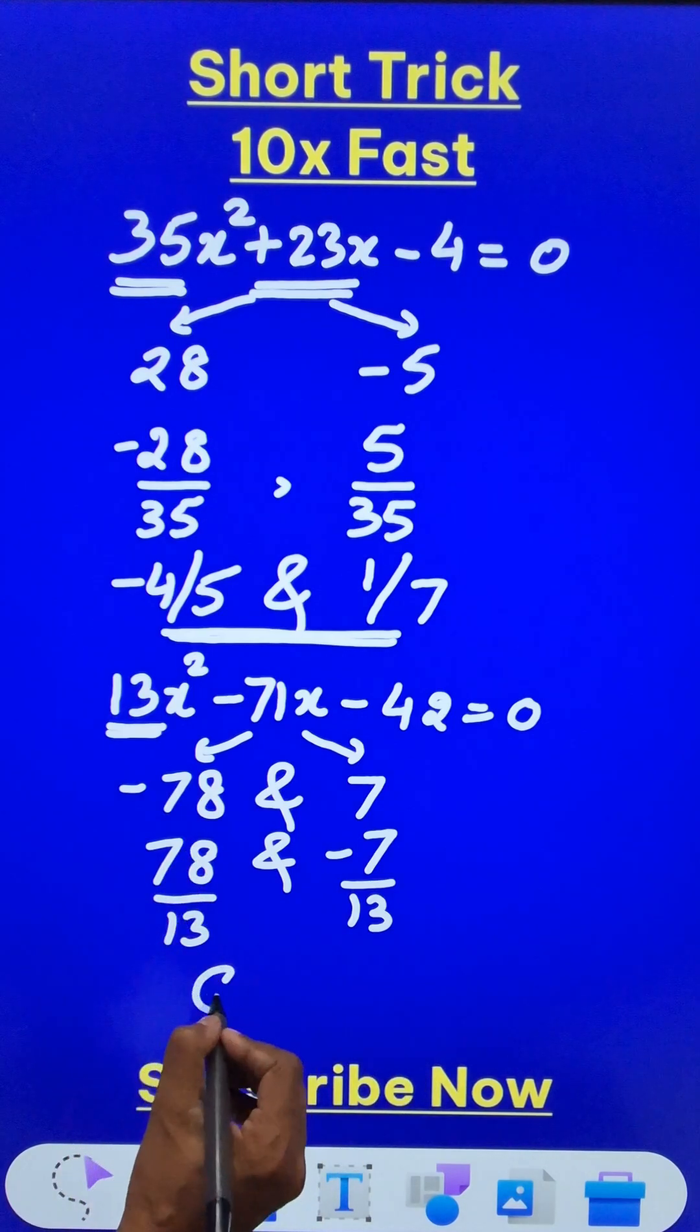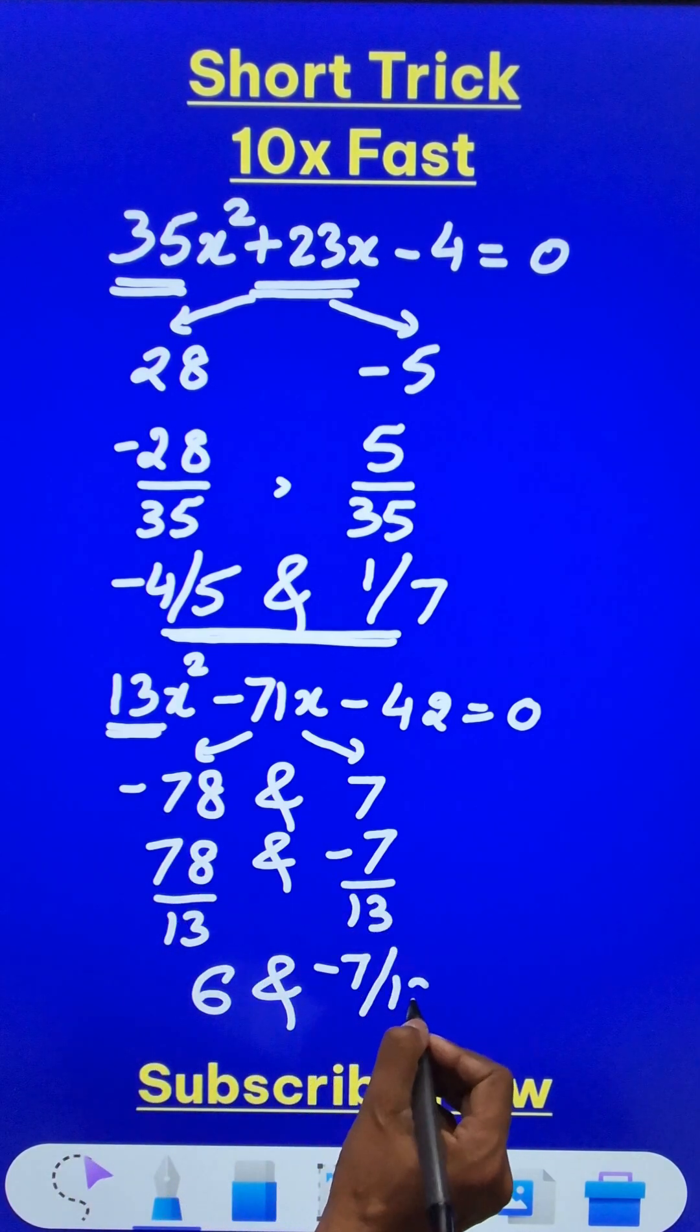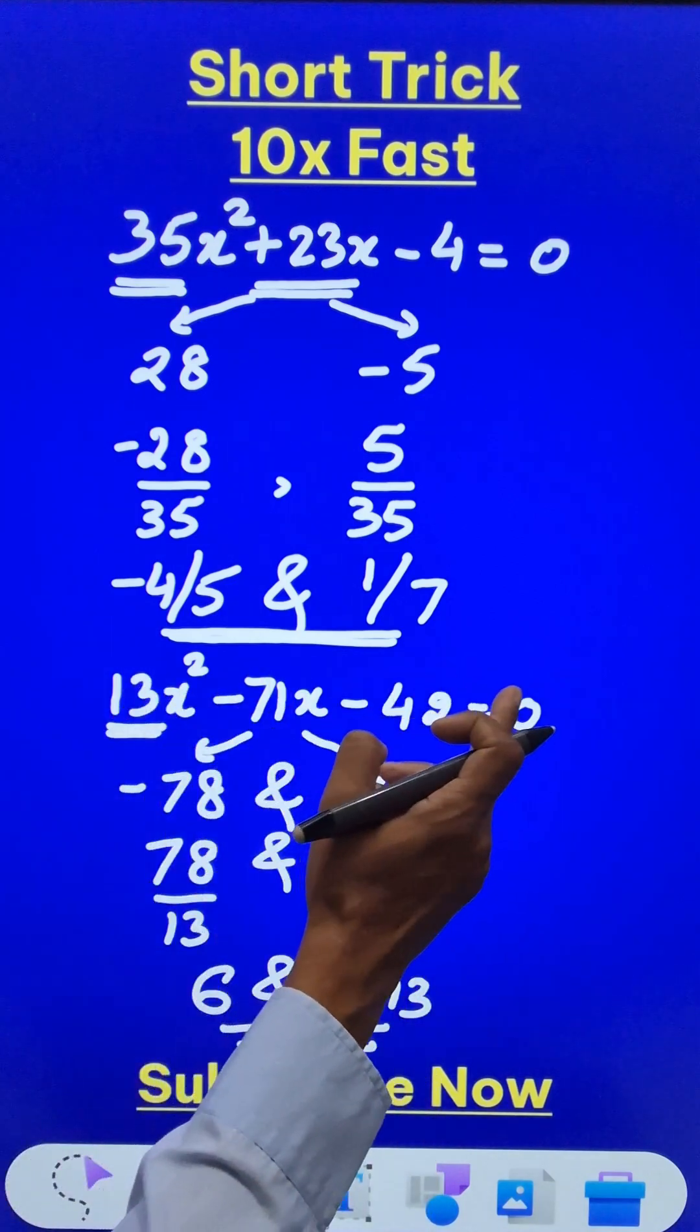You get this as 6 and this remains the same, negative 7 upon 13, which are the roots of this big quadratic equation.